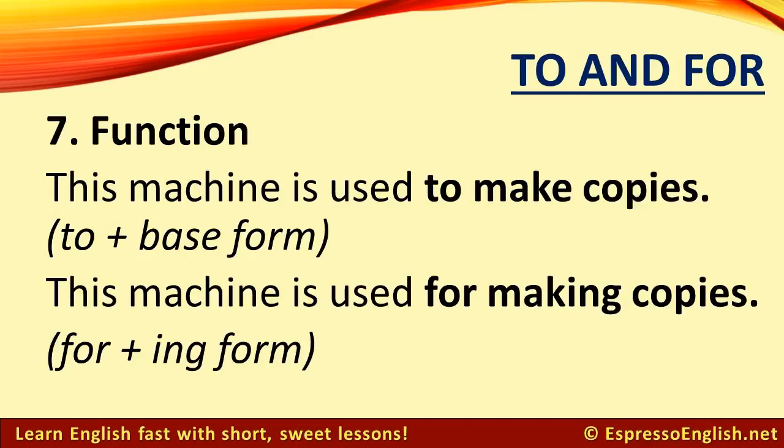When talking about function, we can use 'to' or 'for', but 'to' is followed by the base form, and 'for' is followed by the '-ing' form of the verb. For example, 'This machine is used to make copies.' 'This machine is used for making copies.'